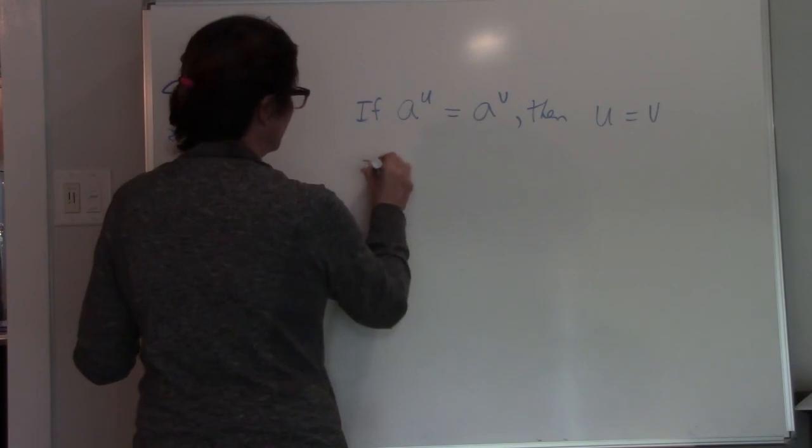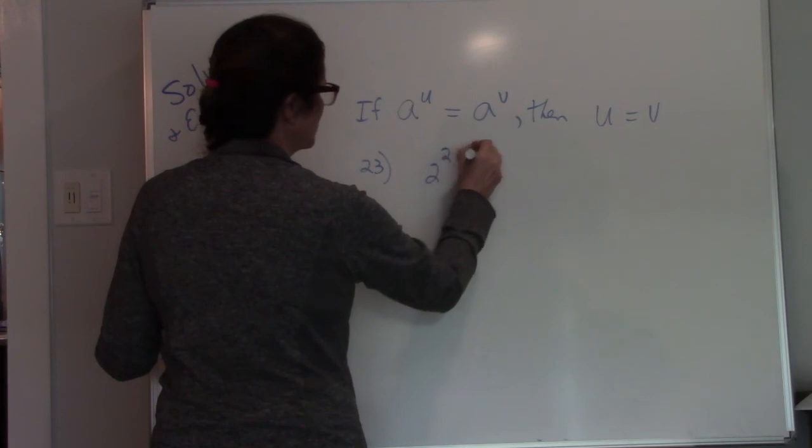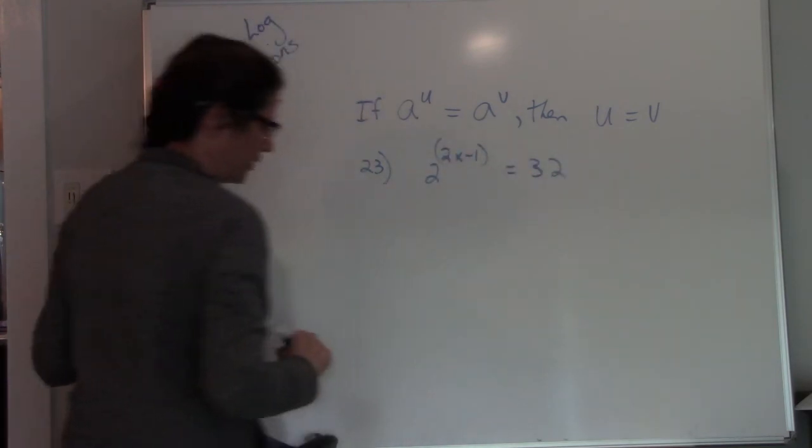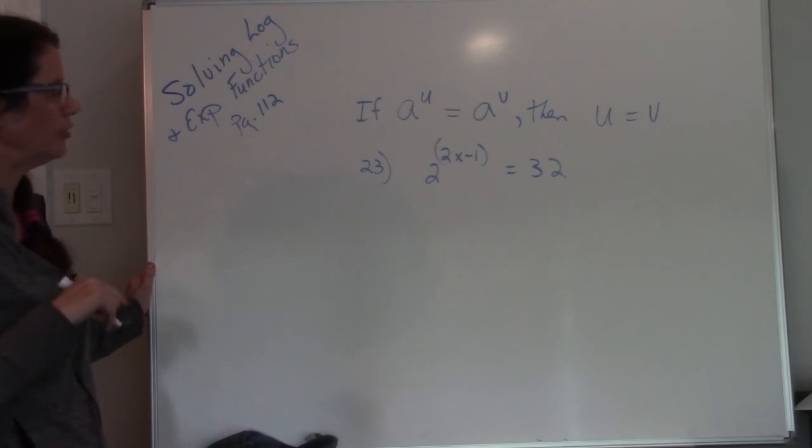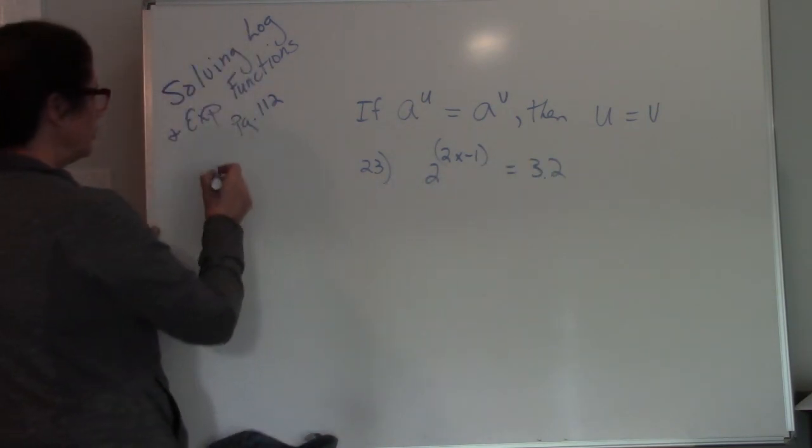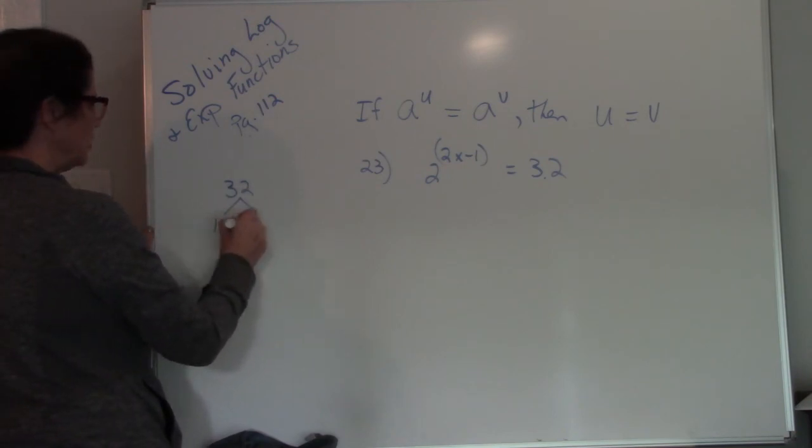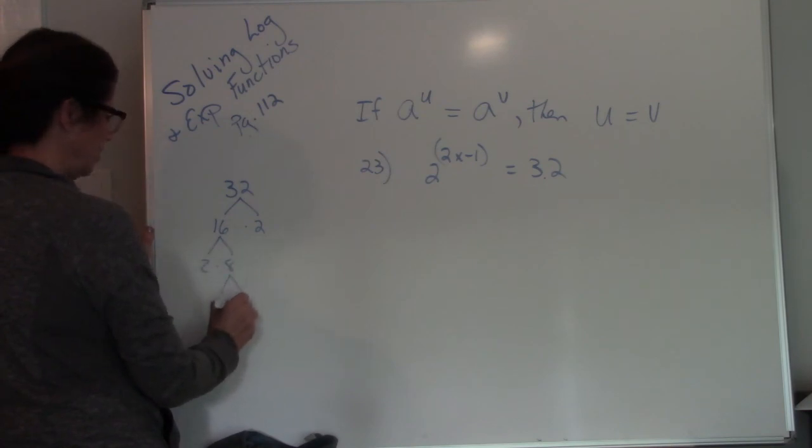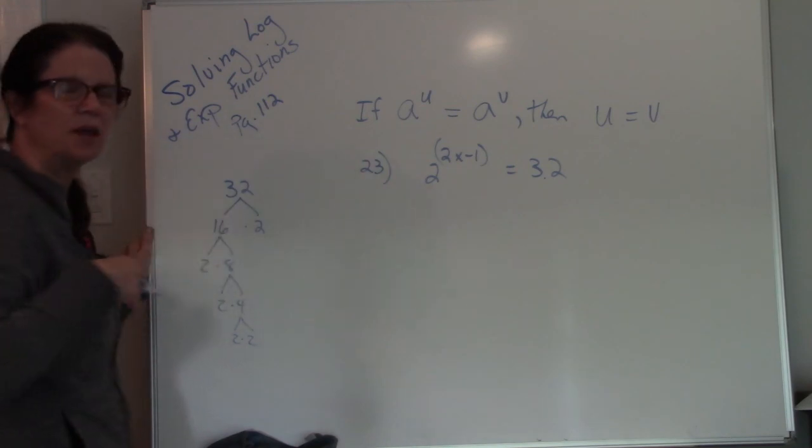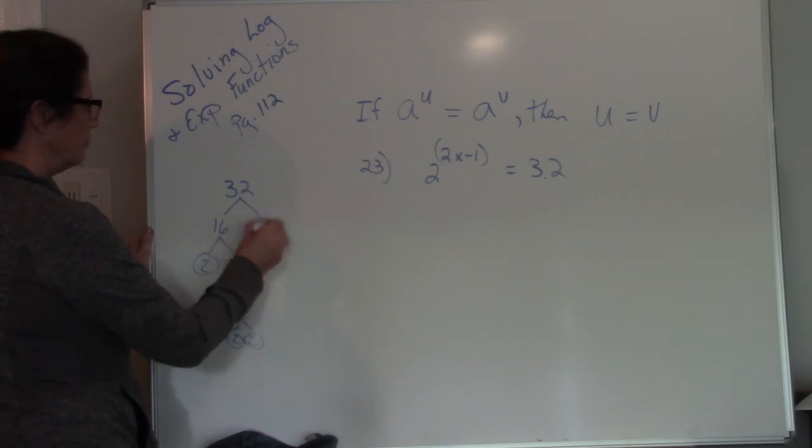Number 23. We have 2 raised to the 2x minus 1 equals 32. So this is where on your calculator you can figure this out pretty easily. Remember, this is not a division problem. This is an exponent problem. So what I want to do is go, okay, if I have 32, how many times can I break this down to get all the 2s? Remember, exponent is repeated multiplication. So I have 1, 2, 3, 4, 5 2s.